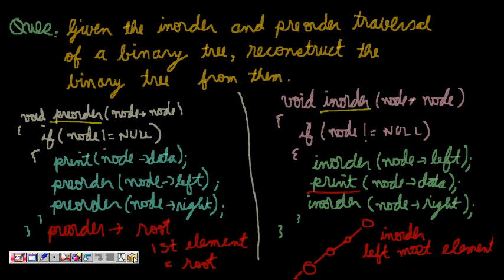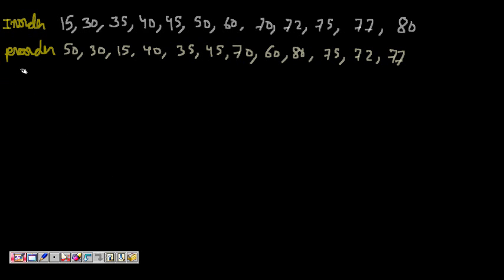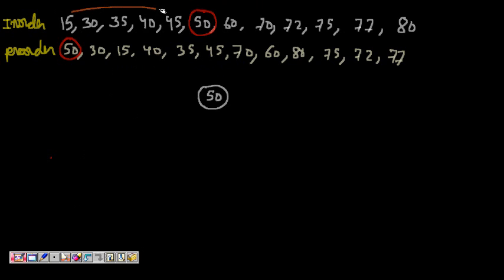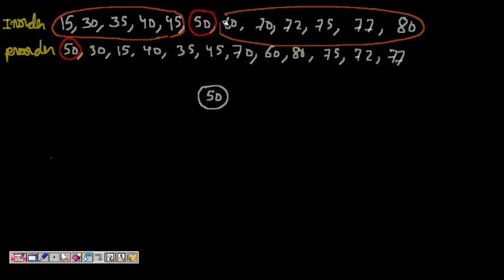With these two observations, let's try to solve the question. We are given the pre-order traversal, so we can say that node 50 is the root of the tree — it's the first element of the pre-order. Now we look at where 50 appears in the in-order traversal. Everything to the left of 50 in in-order is the left subtree, and everything to the right is the right subtree.